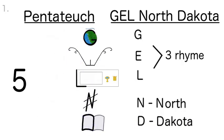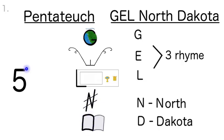Now let's say that three times with just the pictures: 5 Gel, North Dakota, Genesis, Exodus, Leviticus, Numbers, Deuteronomy. 5 Gel, North Dakota, Genesis, Exodus, Leviticus, Numbers, Deuteronomy. 5 Gel, North Dakota, Genesis, Exodus, Leviticus, Numbers, Deuteronomy.